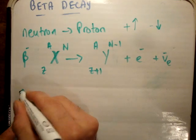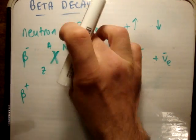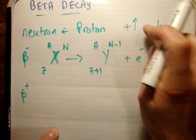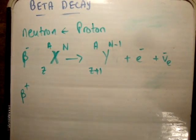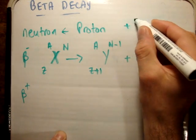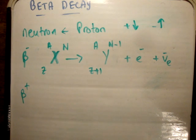So the beta plus process is involving a proton becoming a neutron. It's going the other way. So if a proton is becoming a neutron, then the negative charge is going up, and the positive charge is going down. So the positive charge goes down, and the negative charge goes up. So it's similar to this, except this time it's a positive charge being emitted.